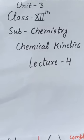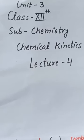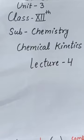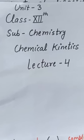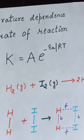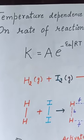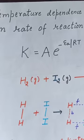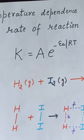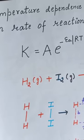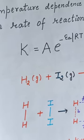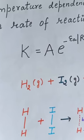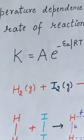Now we will discuss the effect of temperature on the rate of reaction. As we have discussed in the factors affecting rate of reaction, on increasing the temperature the rate of reaction becomes double. Most of the chemical reactions are accelerated by increasing temperature. It has been found that for a chemical reaction with rise in temperature by 10 degrees, the rate constant is nearly doubled.